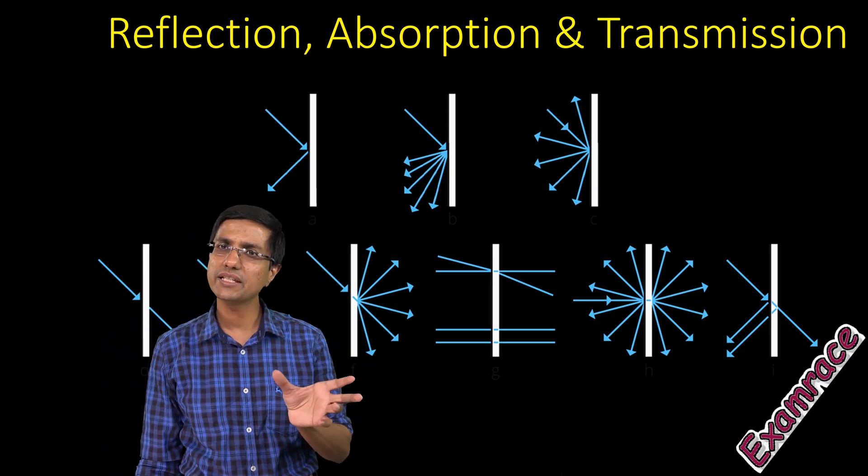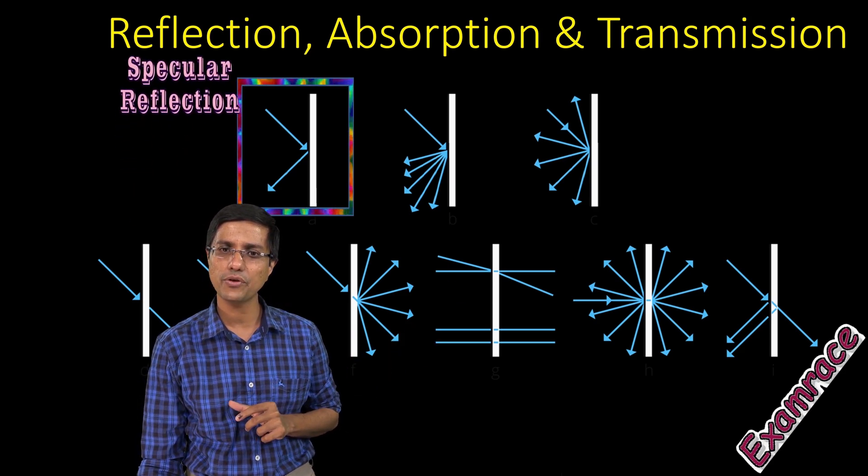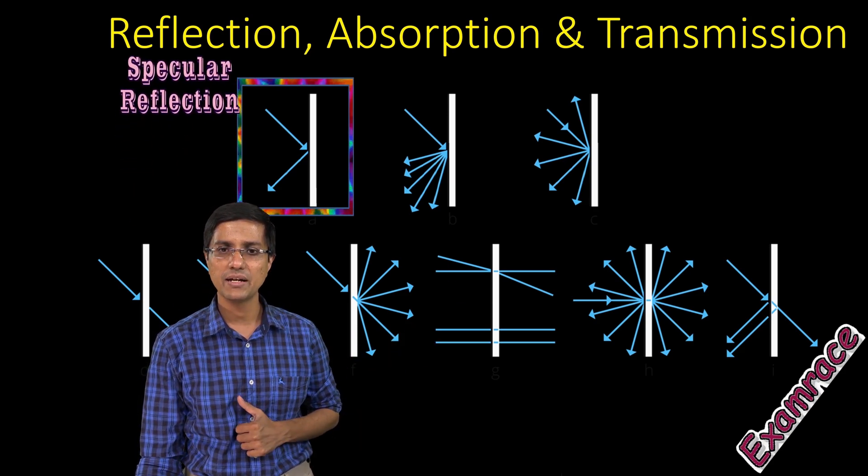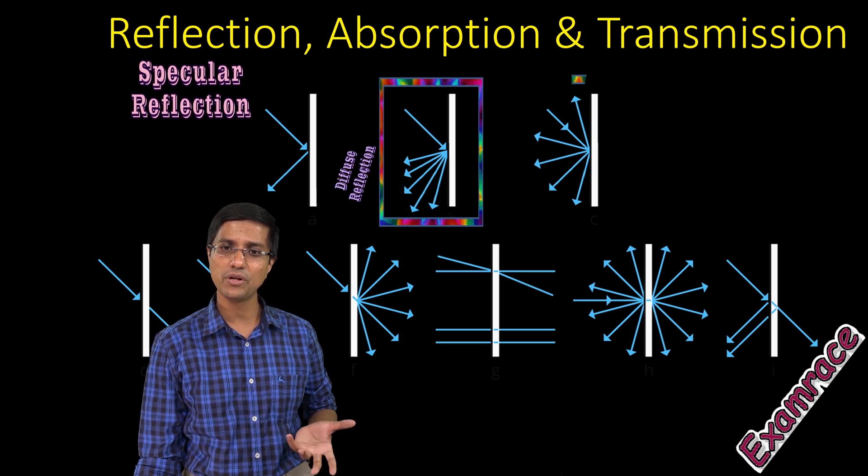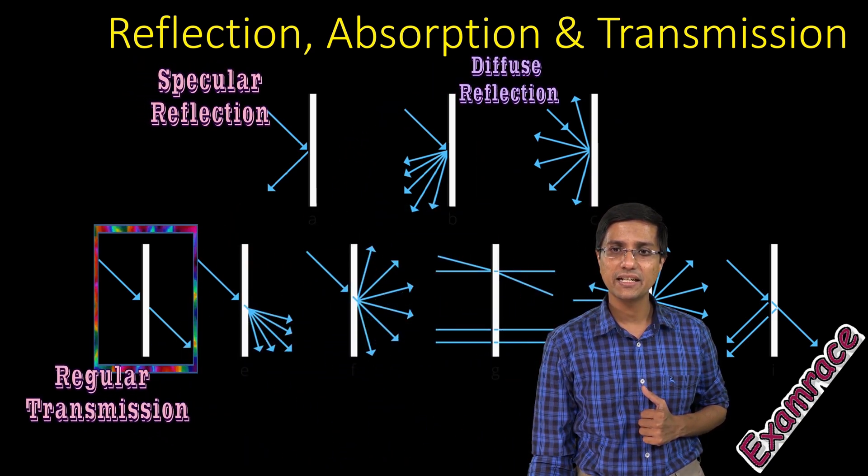So here are some examples. These are simple, you can understand it very simply. So these are rays of light, these are photons coming in. This is simple reflection—perfect, nice regular reflection. This is irregular reflection.